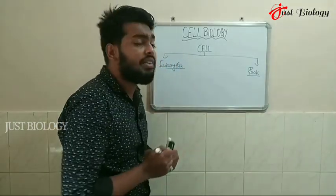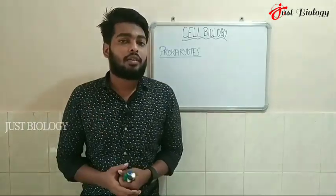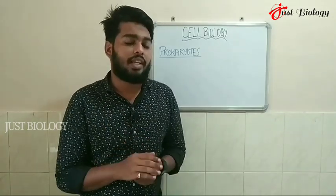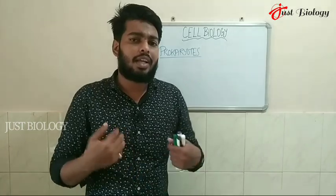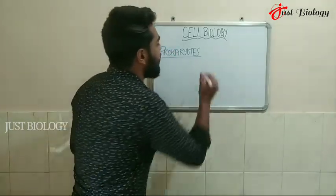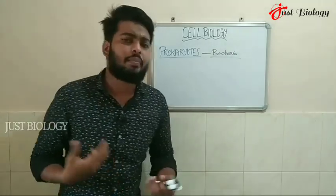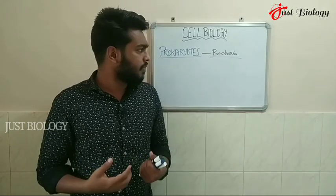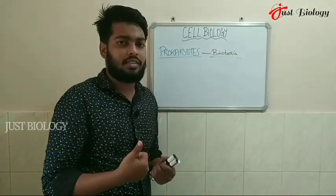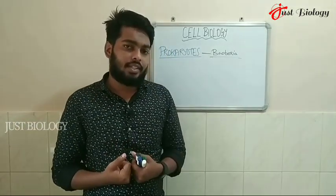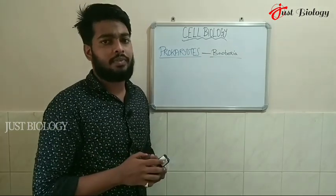We will first discuss prokaryotes, as they are the simplest cells and are unicellular organisms. Prokaryotes are cells which have no true nucleus. The best example of a prokaryote is bacteria. Let's classify bacteria into various classes and examine their characteristics. First, bacteria are unicellular organisms.